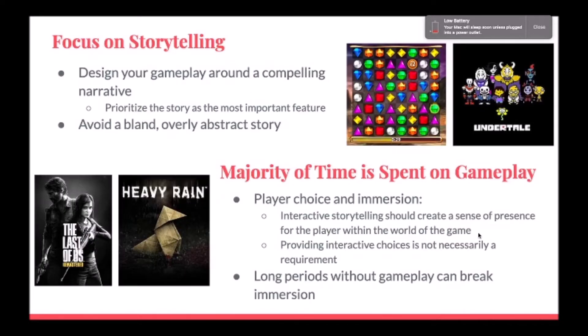Now we're going to dive into each of these design elements in more detail, starting with element one. In order to achieve effective storytelling, the game should be designed with a specific story in mind. For example, the design of Bejeweled obviously doesn't lend itself to a story — trying to incorporate one would feel awkward and out of place. However, a game like Undertale was clearly created with the intent of telling a story through an interactive medium, and so it works very effectively. Prioritizing storytelling during gameplay design also helps avoid shoehorning in bland, excessively abstract stories that may make the player lose interest.